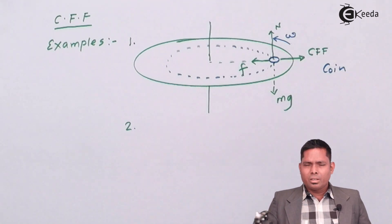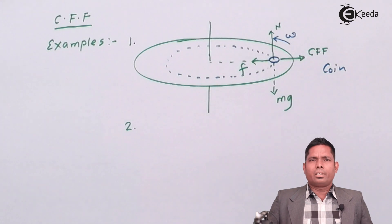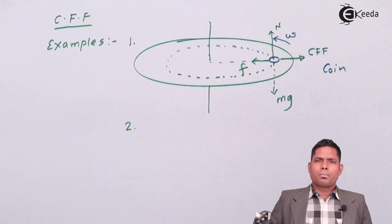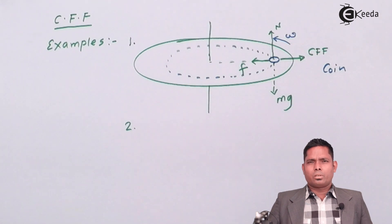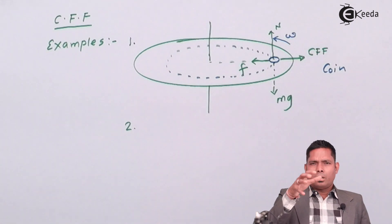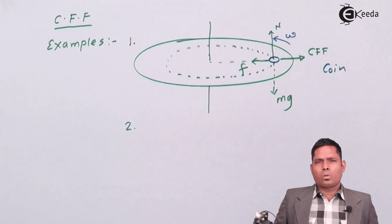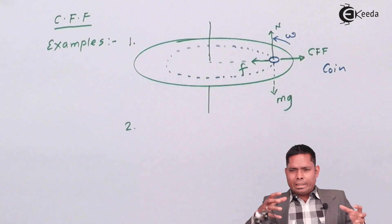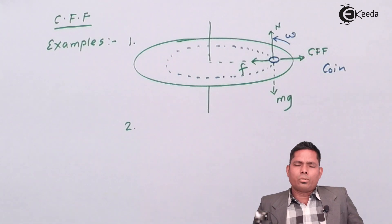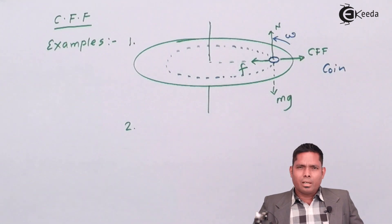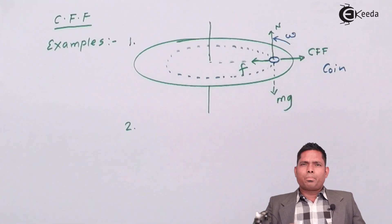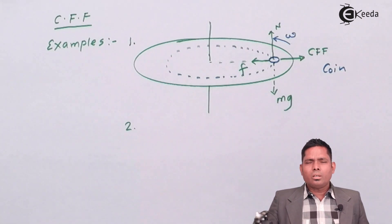The bulging of the earth is also an example. The earth is not perfectly spherical — the equator has a greater radius than the poles; the polar radius is smaller. Because of the earth's rotation about the north-south poles axis, centrifugal force acts radially outward, which causes the earth to bulge at the equator. These are some examples of centrifugal force.